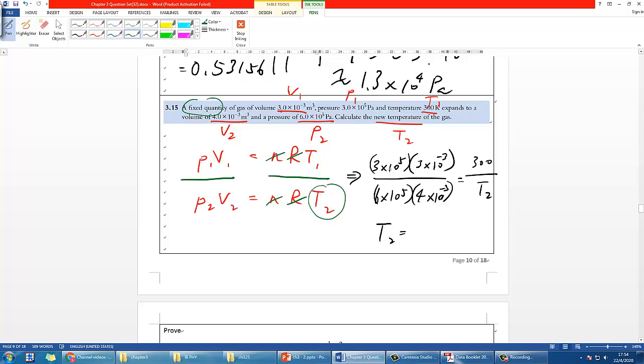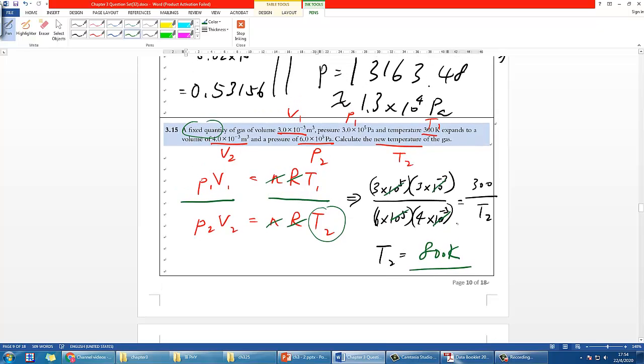After you substitute, you should firstly see this part of 10 should all cancel out, just make your life easier. Then use your calculator: 300 divided by the values you get gives you 800K at the end. And that is all for these three examples.